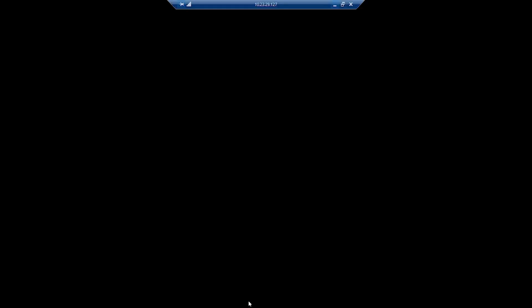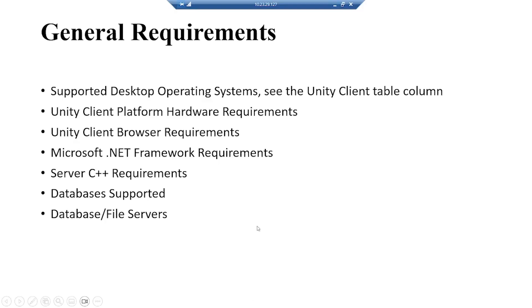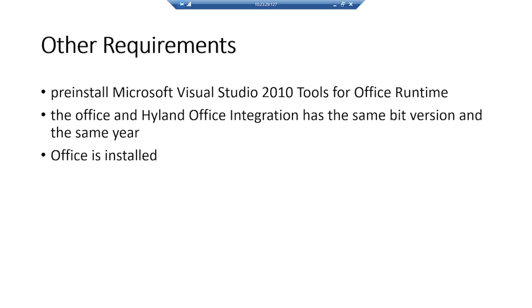To install the integrated version of OnBase, first we need to make sure that all the general requirements are met. We'll be installing the 2019 version of integrated OnBase. The requirements include pre-installing Microsoft Visual Studio 2010 Tools for Office Runtime. We also need to make sure that Office and Hyland Office Integration have the same bit version and the same year. For this demo, we installed 64-bit Office 2019, so we're installing 64-bit Hyland Office Integration 2019 version. We also need to install Office before installing the integrated version.